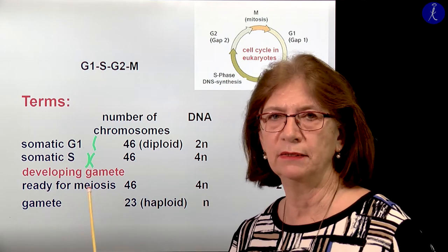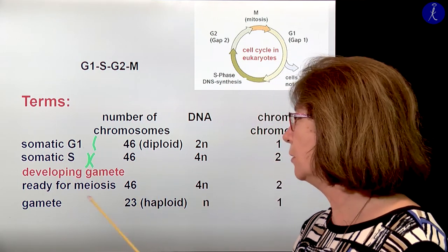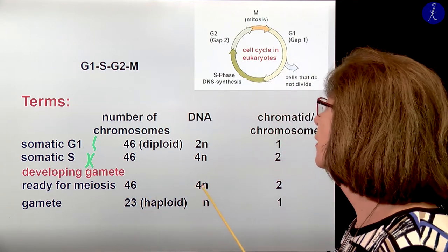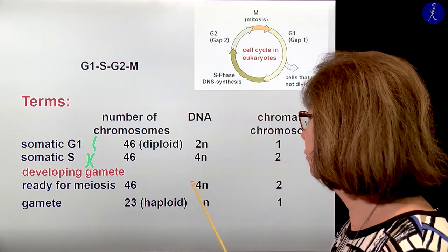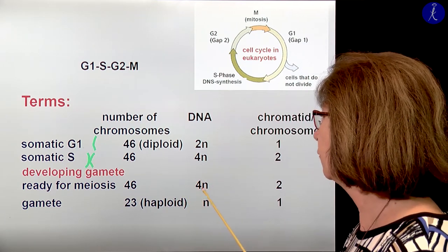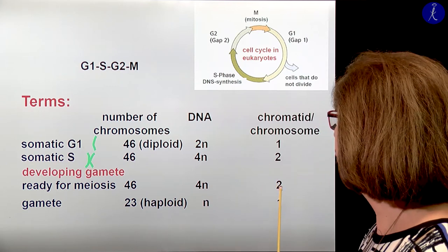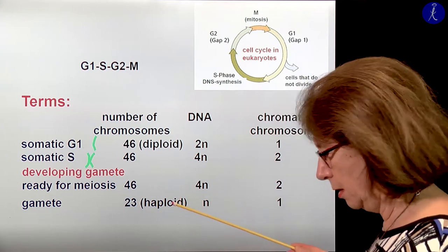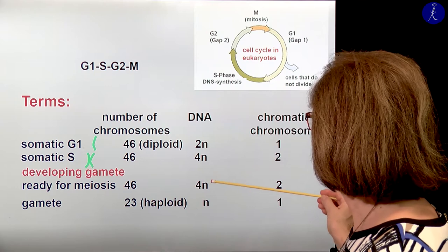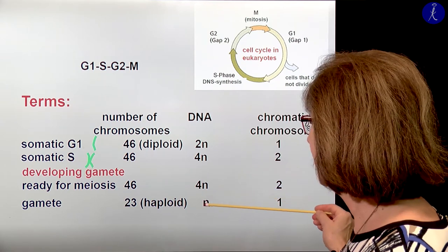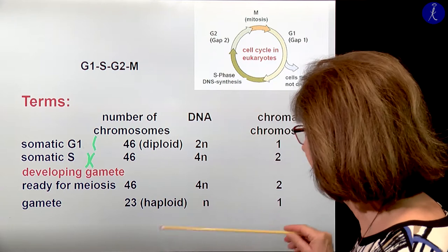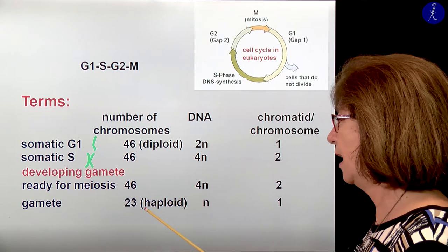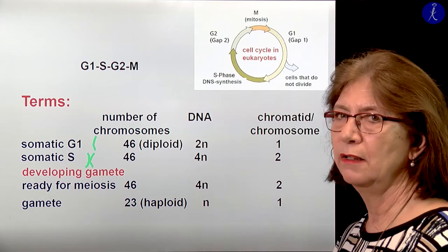In the developing gamete, when the cell is ready for the first meiotic division, we also have 46 chromosomes with 2 chromatids — double-stranded chromosomes — so the amount of DNA is 4n, and we have 2 chromatids per chromosome. This will divide twice, so if you divide 4n twice, then you get at the end 1n in the cell as the amount of DNA — that means 23 chromosomes — this is a haploid cell with 1 chromatid in each chromosome.